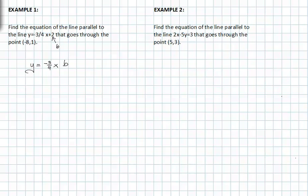We now have to use the values that are in our coordinate point negative eight, one to plug in for x and y so we can find b. We do this by simply putting in negative eight for x and one for y.